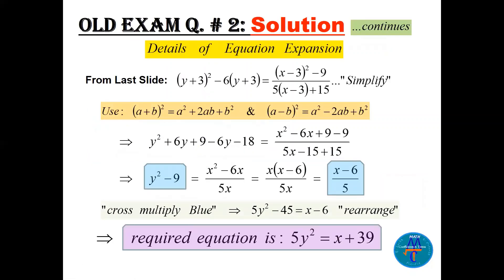This is the continuation of question two — solution details. Use the formula (a + b)² and (a − b)²: expand to get x² − 6x + 9 and combine terms. The −9 cancels, and 5x − 15 + 15 also cancels, leaving 5x. Taking out common factors and simplifying: 6y cancels, leaving y² − 9. Cross-multiplying gives 5y² − 45 = x − 6. Taking 45 to the other side: 5y² = x + 39.